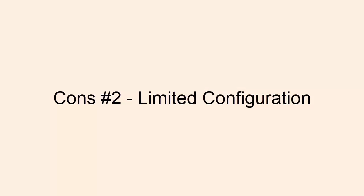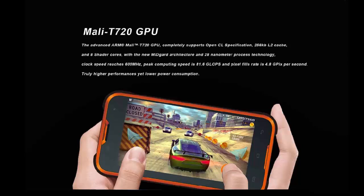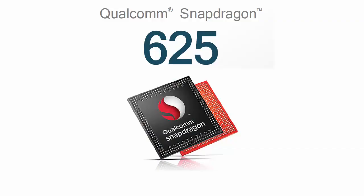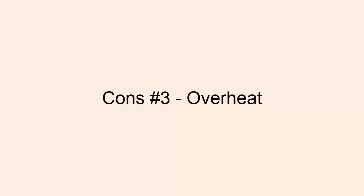Number two: Limited Configuration. For example, Mali T720 MP2 contains only 2 cores. Also, in budget smartphones such as the Lenovo K8 Note, it has Mali T880 MP4 which has 4 cores, while for the same price you can get an Adreno 506 GPU from other brands like Xiaomi, which has a better configuration than the Mali T880.